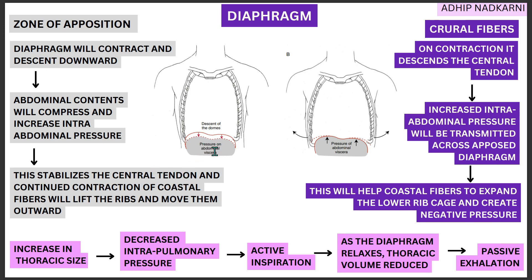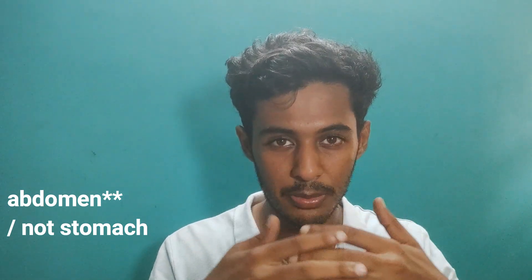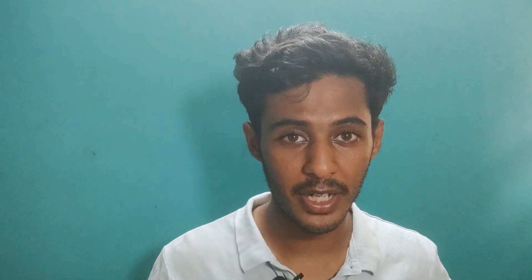With the central tendon well stabilized and the costal fibers continuing to contract, the ribs are lifted and moved outward. You can actually try this yourself: if you breathe in with your stomach relaxed, the stomach moves out. But if you keep your stomach tight — building intra-abdominal pressure — and then inhale, you can see the ribs move outward. The diaphragm pushes the ribs out as it descends because of the increased intra-abdominal pressure.